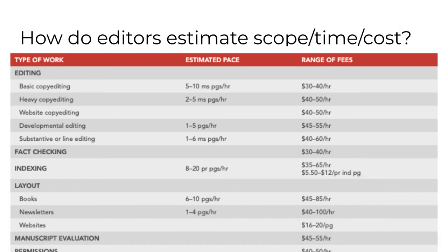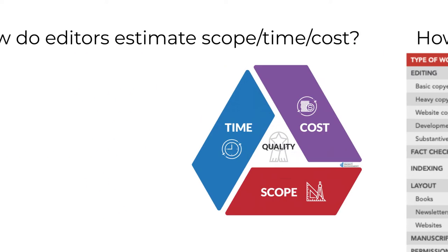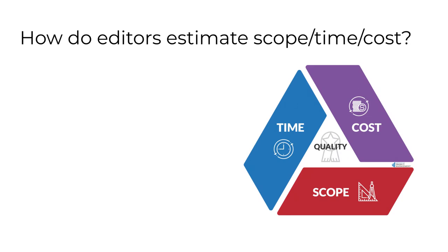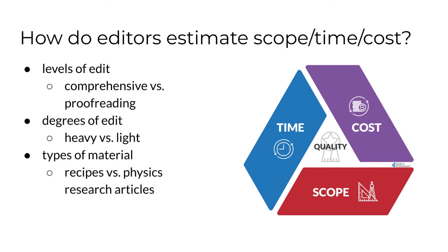I hope that you're thinking these columns are related to the triple constraints on quality that I've already talked about in many previous lectures. The triple constraints make it clear that scope, time, and cost are interrelated. If you change one, the others change. If you edit more quickly than I do, then you can either increase the scope of your edit and keep the time the same, or you can keep the scope the same and cut the time. I'm giving you a list of the major things that affect scope.